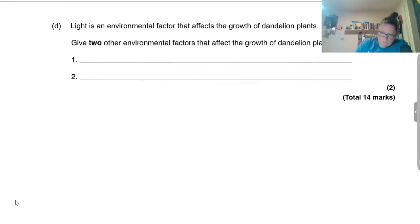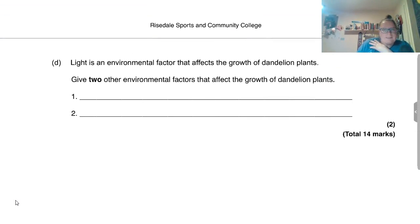We've got one question left. Light is an environmental factor that affects the growth of dandelion plants. Give two other environmental factors. So we're thinking about things in the environment. These are going to be your abiotic factors—non-living factors.